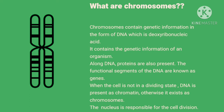In the nucleus, along with DNA, we also have proteins present called histones. They are present in combination with chromosomes and DNA — the DNA is wrapped around those histone proteins. The functional segments of the DNA are also known as genes. DNA consists of a coding material and non-coding material. The functional parts are known as genes. When the cell is not in a dividing state, DNA is present as chromatin. When the cell starts to divide, it exists as chromosomes. The main process which occurs inside the nucleus is cell division — mitosis and meiosis.